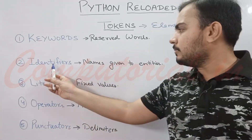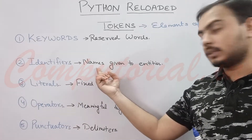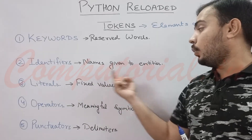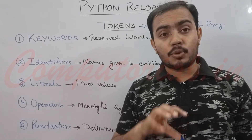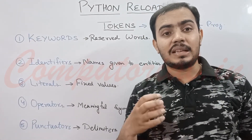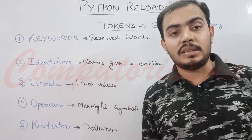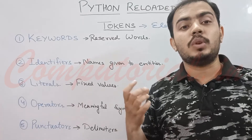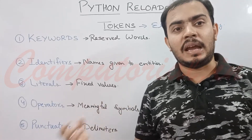The next term we have is identifiers. From this name you can easily understand it — identifiers are names given to entities. Whatever entities you or any programmer creates in a program, these are user-defined entities. The names that you give to these entities are called identifiers.